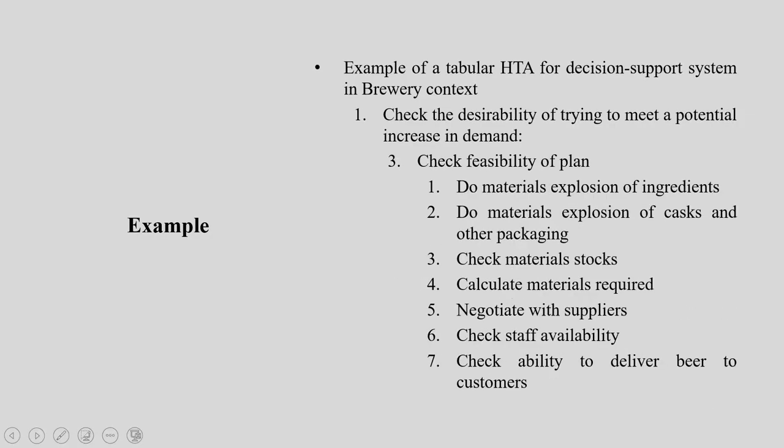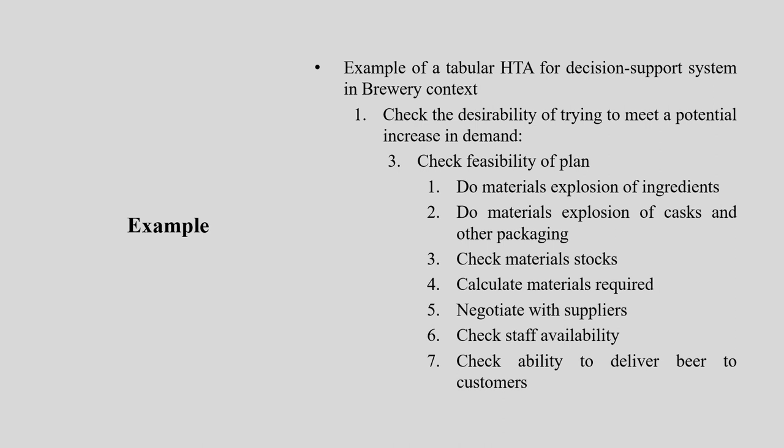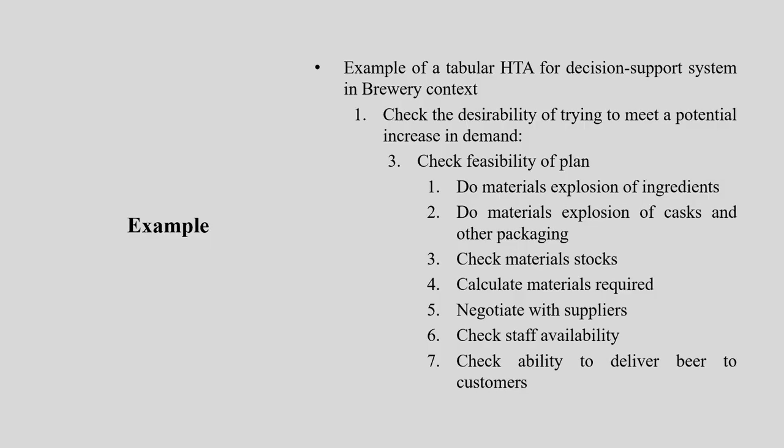Once these two steps are complete, we need to see how we can feasibly execute the plan we are making. To do so, there are different steps. I have jotted down seven major steps here, though there may be some differences depending on your particular case — you can add or subtract some. The first step for checking feasibility is: do the materials explosion of ingredients — are they available or not?